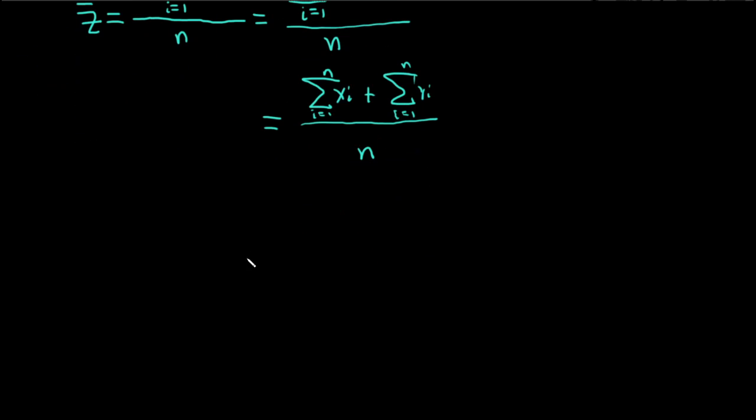And now we can break it up into two terms. We can write this as the sum of the Xs from 1 to n plus the sum of the Ys as i runs from 1 to n over n.